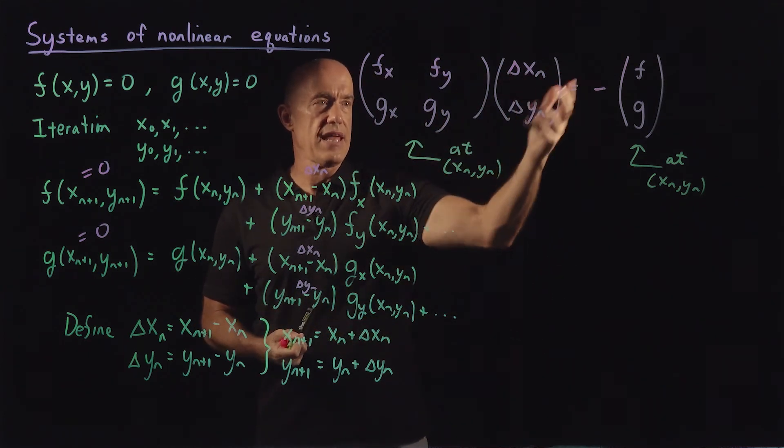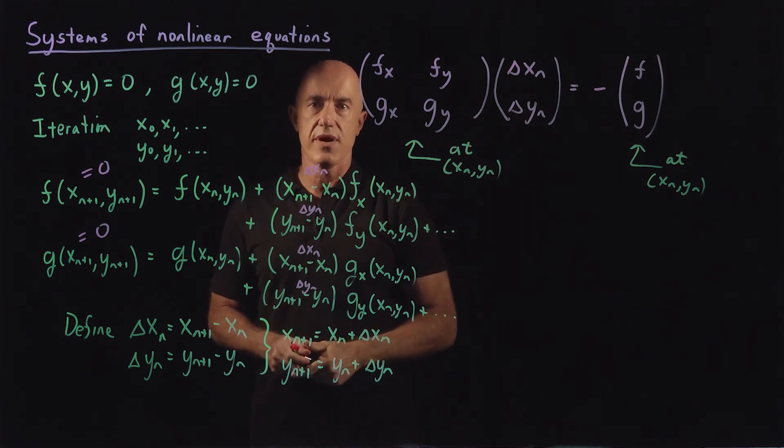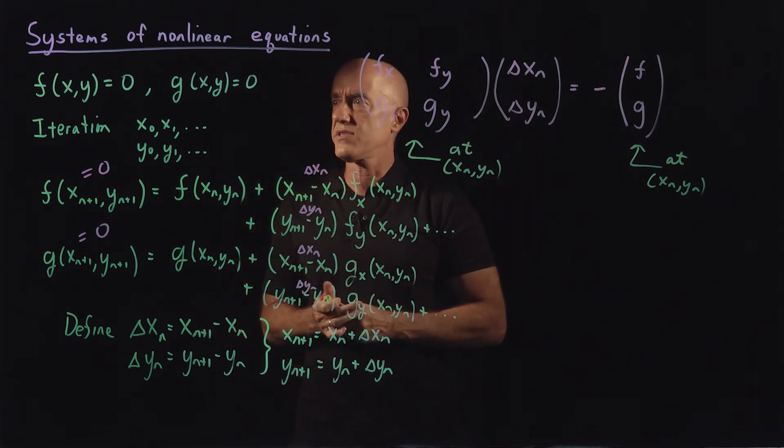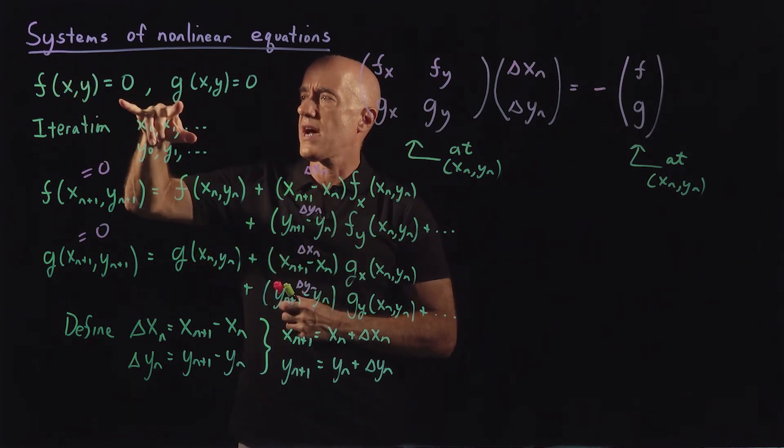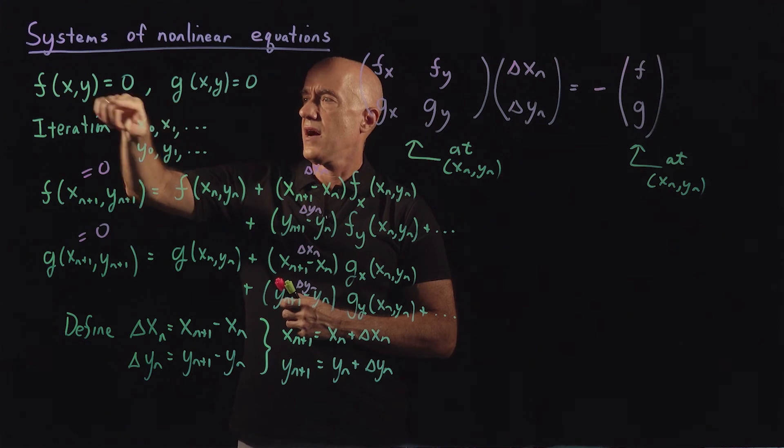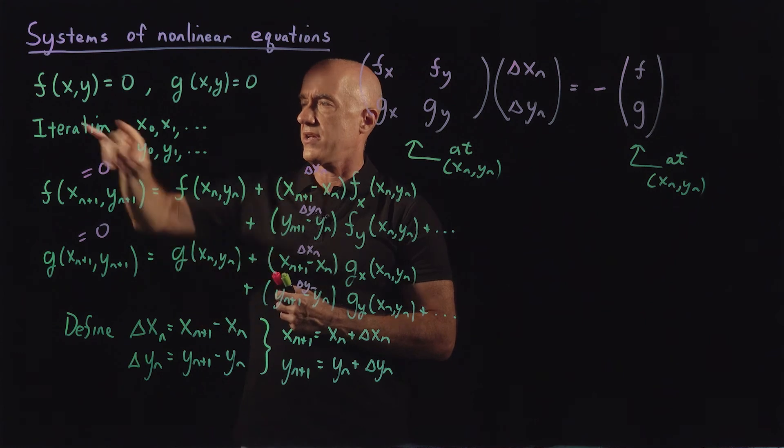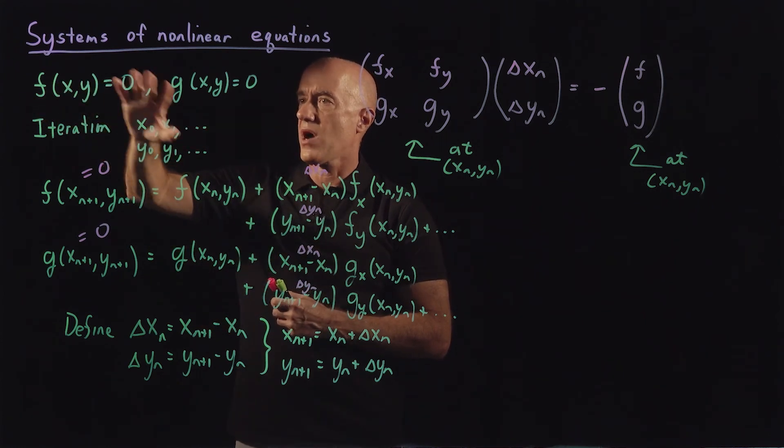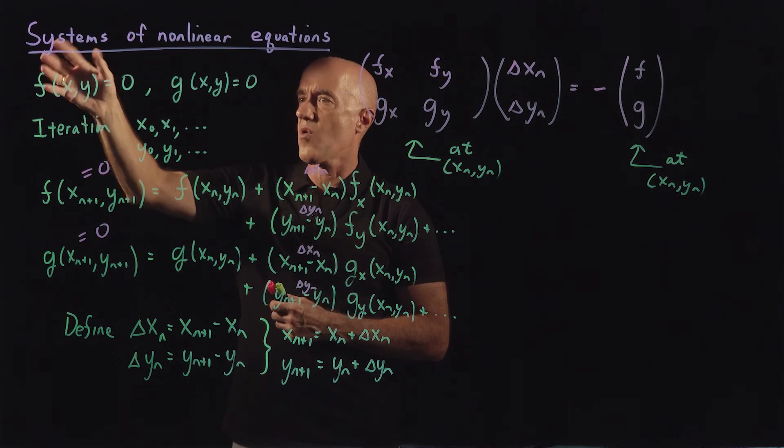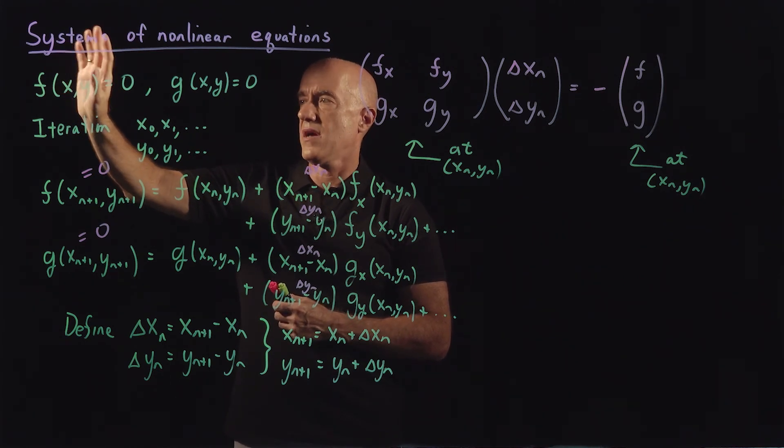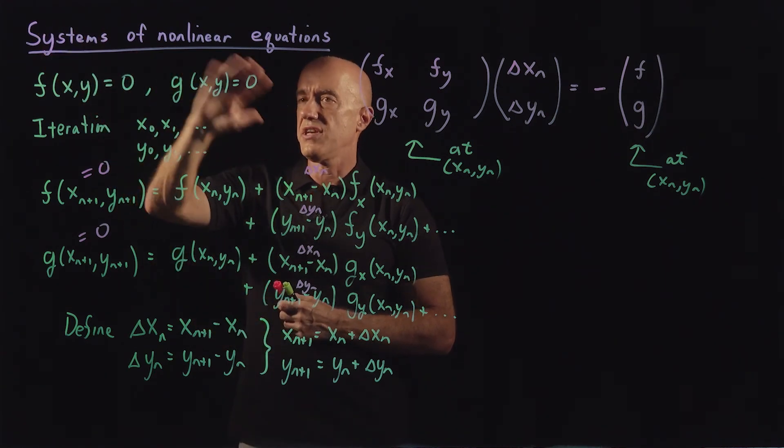So we get then a matrix equation, an iteration equation. How does this work? We're trying to solve these two nonlinear functions for the variable x and y. So two coupled nonlinear equations. f of x, y equals zero. Some general form of x and y. It could be x squared y plus whatever. It could be anything. And g of x, y equal to zero.